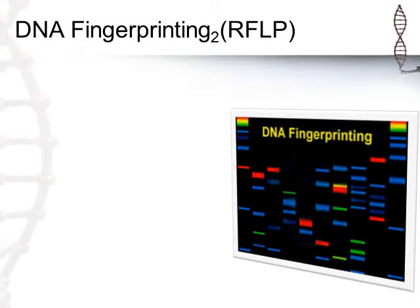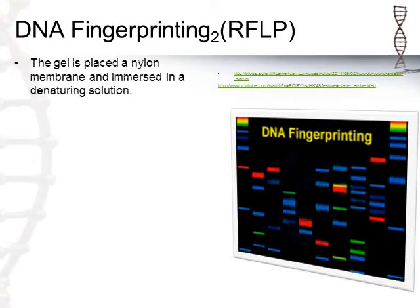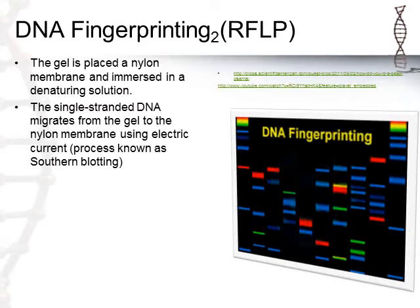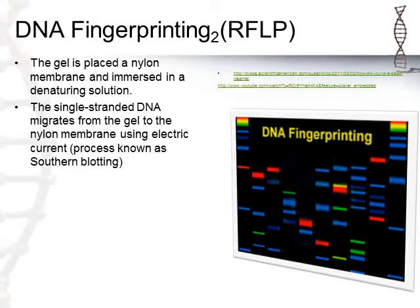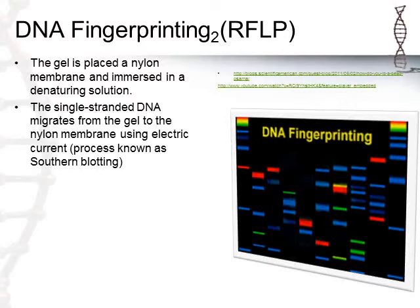A finished RFLP DNA fingerprint should show distinct bands, not the smear we get initially — so a few more steps are needed. The smeary gel is placed on a nylon membrane and immersed in a denaturing solution, which changes how the DNA is wound around histone proteins, giving us single-stranded DNA. Those single strands migrate from the gel onto the nylon membrane using an electrical current — a process called Southern blotting.